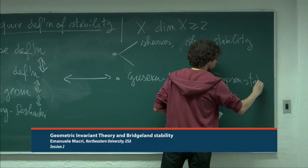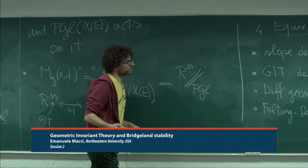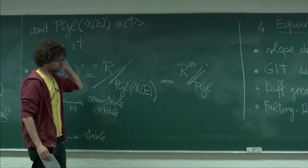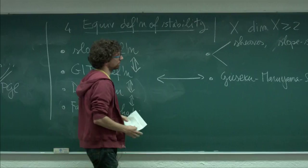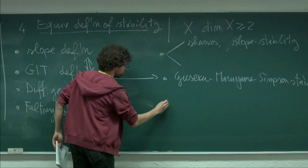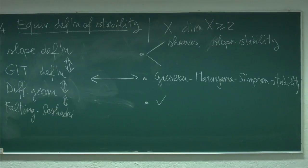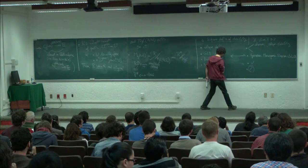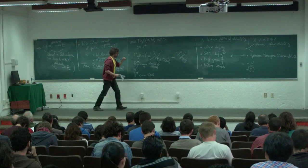Now I want to know which of these I can generalize to higher dimension, starting with a variety X of dimension ≥ 2. The slope definition generalizes to the standard notion of Mumford–Takemoto slope stability — a well-known definition, but it has no GIT interpretation in higher dimensions, making it hard to construct moduli spaces. The GIT definition generalizes to Giesecker–Maruyama–Simpson stability, which works well and gives nice moduli spaces.